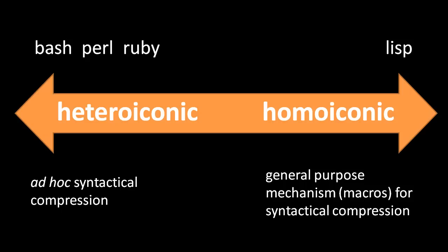When you have a homoiconic language like Lisp, syntactical conveniences don't have to be introduced as special cases. You can have one general-purpose mechanism called macros that gets you all the syntactical compression you should want. So this argument suggests that homoiconic syntax is the ideal in syntax design, but the homoiconic syntax of Lisp quite famously really does have some serious problems. So what does Animus do to address those problems?